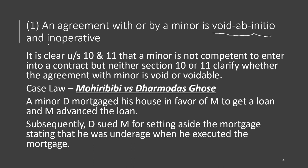This is made operative by the popular case law Mohiri Bibi versus Dharmodas Ghosh. Under Sections 10 and 11 it is clear that a minor is not competent to enter into a contract, but neither section clarifies whether the agreement with a minor is void or voidable. This case made it clear. A minor, Dharmodas, mortgaged his house in favor of Mohiri Bibi to get a loan. Mortgage means giving your house as collateral and borrowing money.